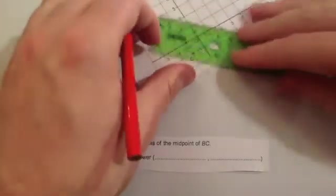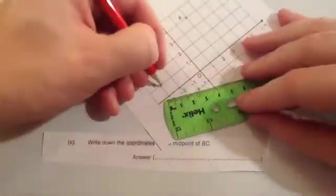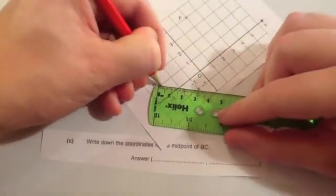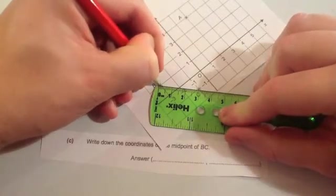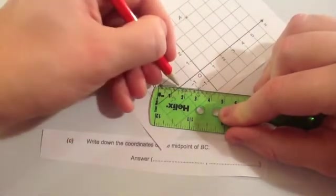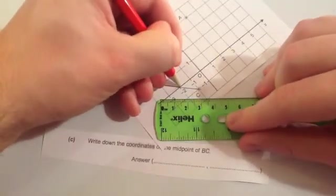To use the measure technique, you just join them up, measure it and then half it. So join them up there, it's about 3 centimeters. So in the middle is 1.5, so there's the coordinate there.